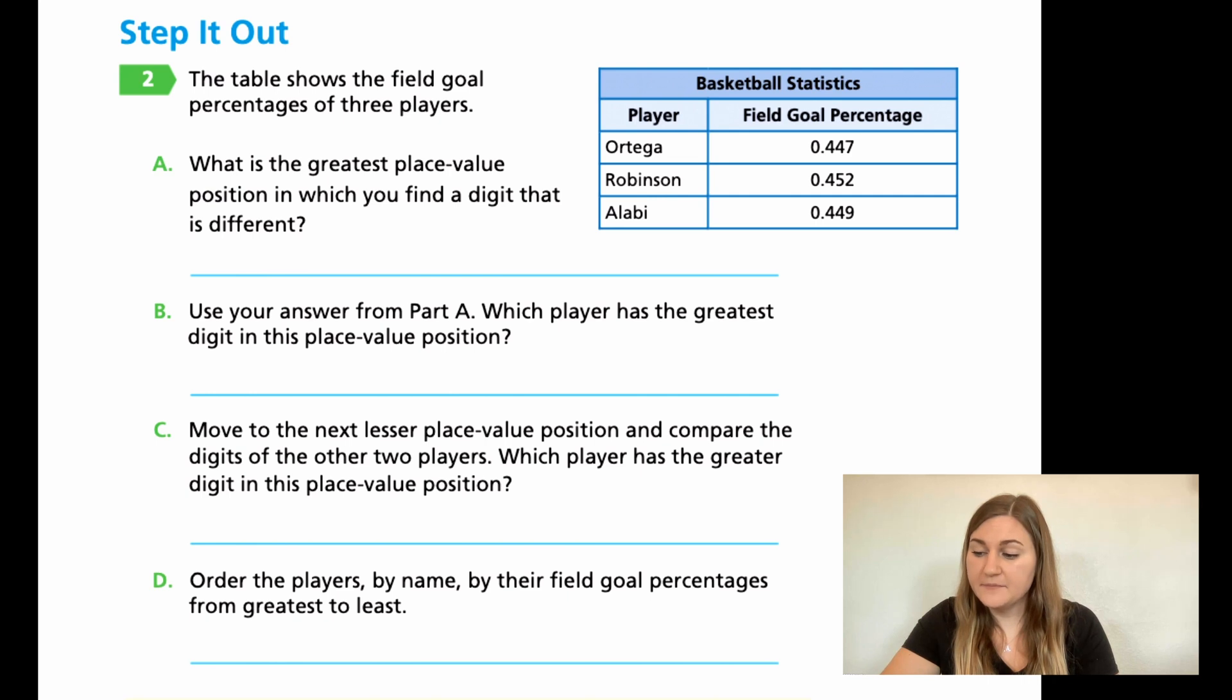And then for B, use your answer from part A. Which player has the greatest digit in this place value position? So is there only one person that has the bigger number in the difference? Write that person's name down. For C, move to the next lesser place value position. So we know it's not going to be the thousandths, right? So go to the next place value. Now look at those two different numbers and compare those digits of the other two players. Which player has the greater digit in this place value position? So we know who's going to be first. And then when you're going to the next question, compare the next two in that place value. Which of those two now has the highest one? Write their name for C. And then for D, order the players by name, by their field goal percentages from greatest to least. So who has the highest? Write their name. Second place, write their name. And then last place with the least, write their name.